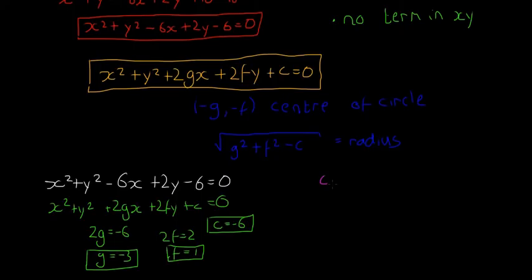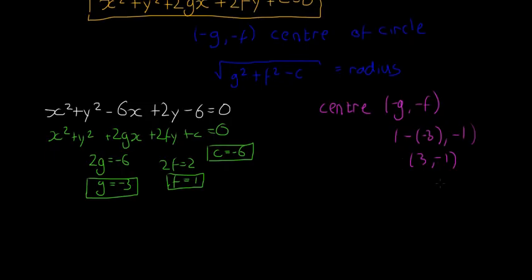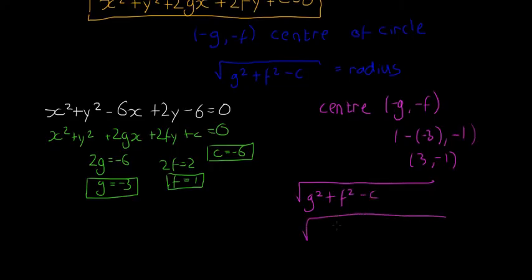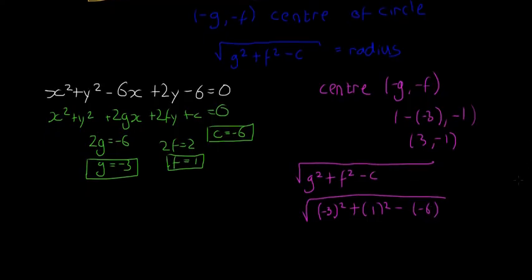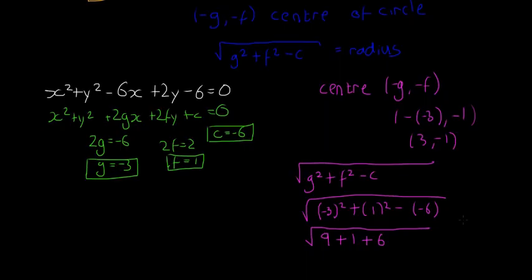Using this information to find the center: the center is minus g, minus f, which gives minus minus 3 and minus 1, so the center is (3, minus 1). The radius is the square root of g squared plus f squared minus c, which is the square root of minus 3 squared plus 1 squared minus minus 6 — that's the square root of 9 plus 1 plus 6, which is the square root of 16.